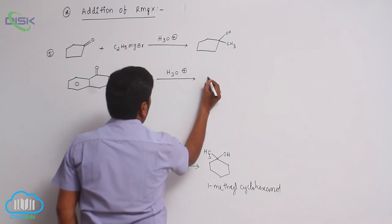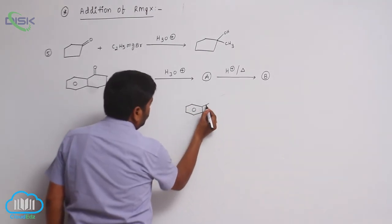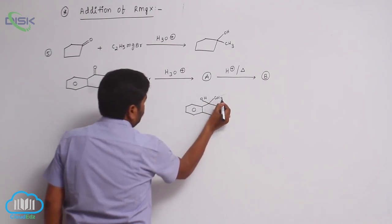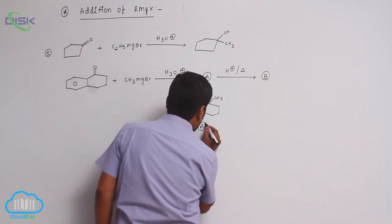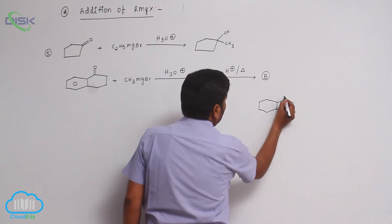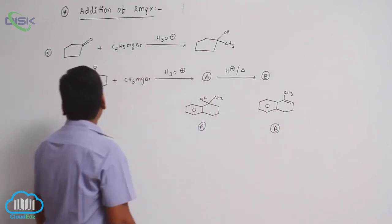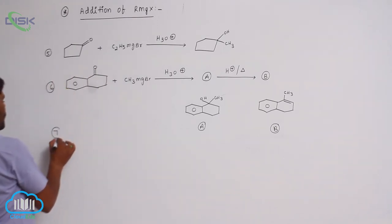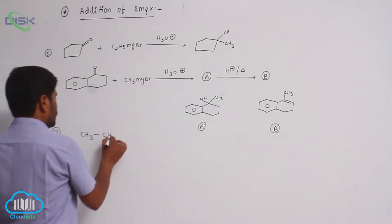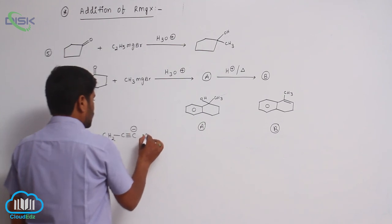Acidic hydrolysis gives compound A. Compound B has an OH and CH3 group. Dehydration of compound B takes place to give a double bond — this is compound B. Then using CH3-C≡C⁻ (sodium acetylide).